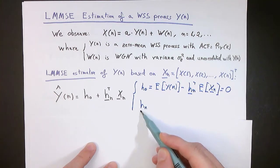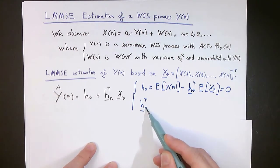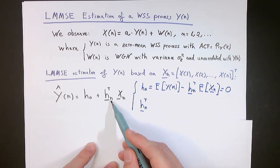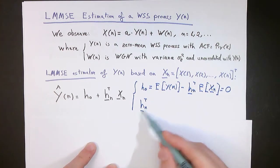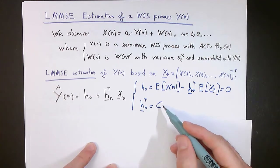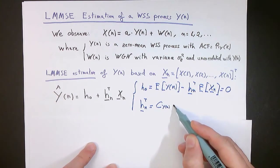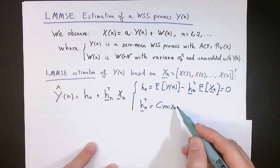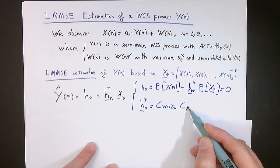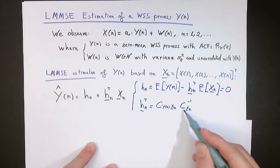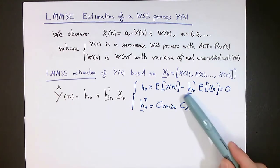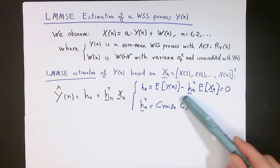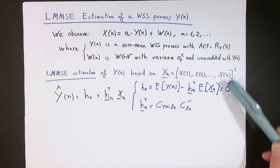The other vector of coefficients, which we have called h of n to denote that this is the vector of coefficients for the estimate of the nth sample of y, is obtained from the covariance vector of y of n with the vector of observations, which multiplies the inverse of the covariance matrix of the vector of data observations. Notice that in order to compute the coefficients of the LMMSE estimator for y of n, we need to invert the covariance matrix of the observations, which is a matrix of size n times n.